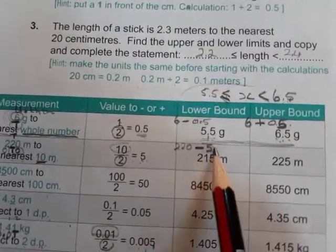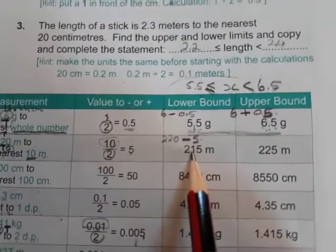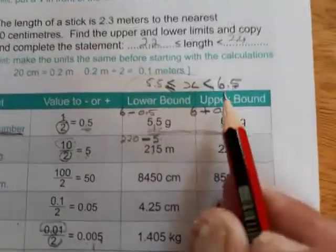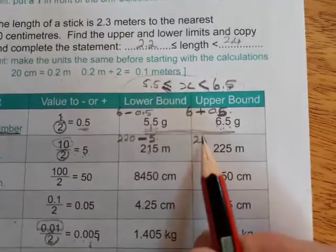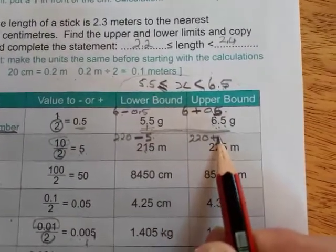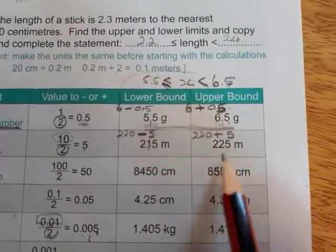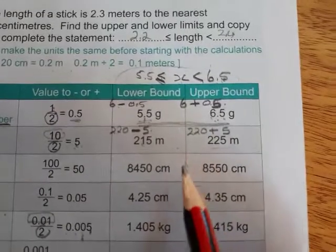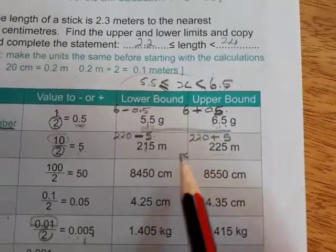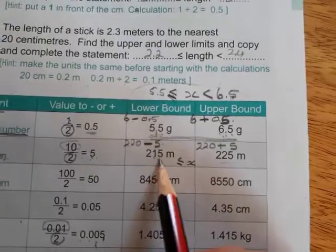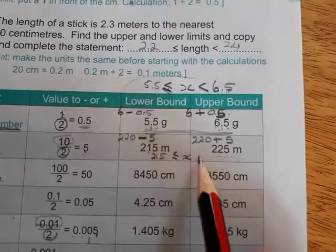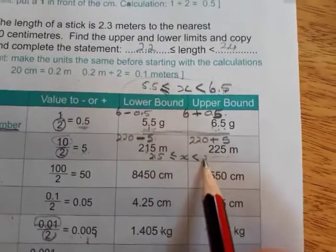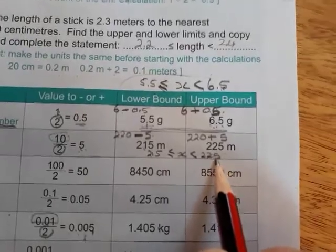And 220 minus 5 gives you 215. For the upper bound, you have 220 plus 5, plus your limit, which gives you 225. So the inequality would be X is greater than or equal to 215, and it is less than 225.